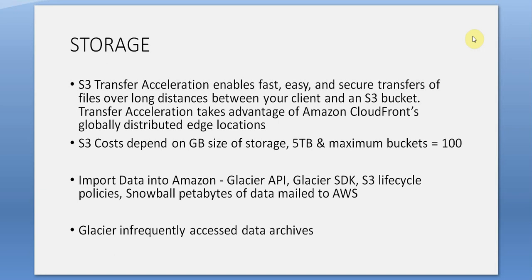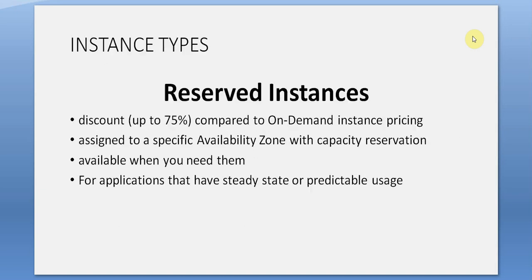Snowball allows petabytes of data to be physically mailed to AWS. Glacier is used for infrequently accessed data and archives.